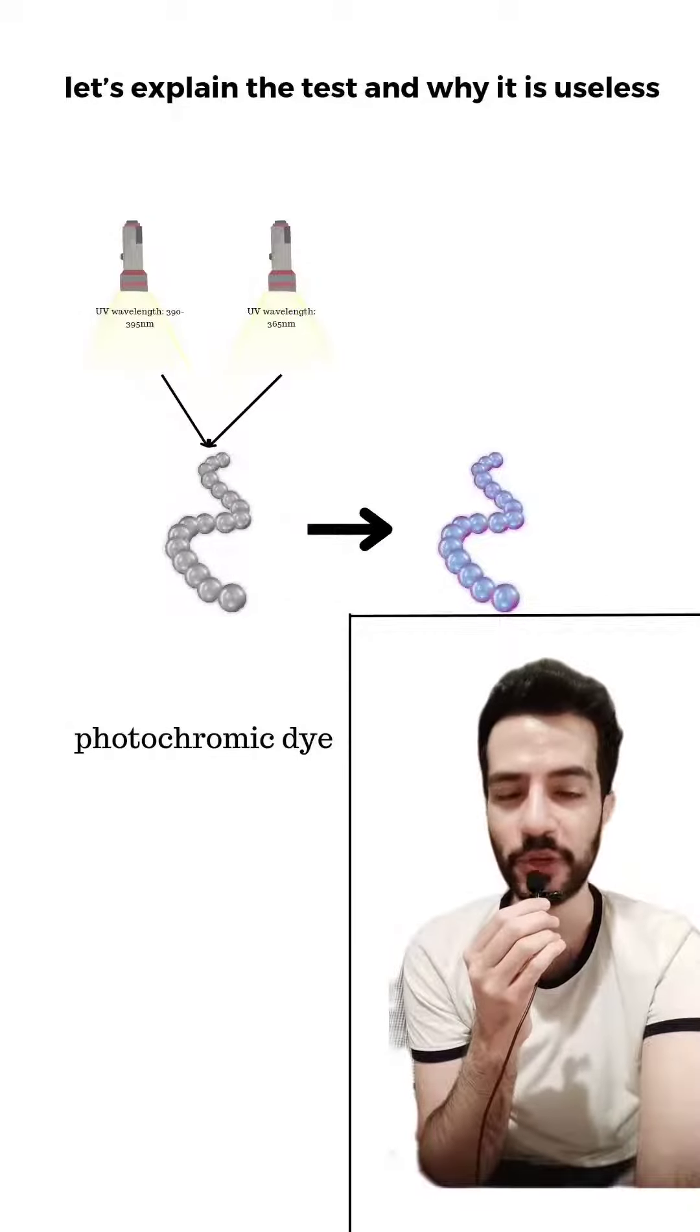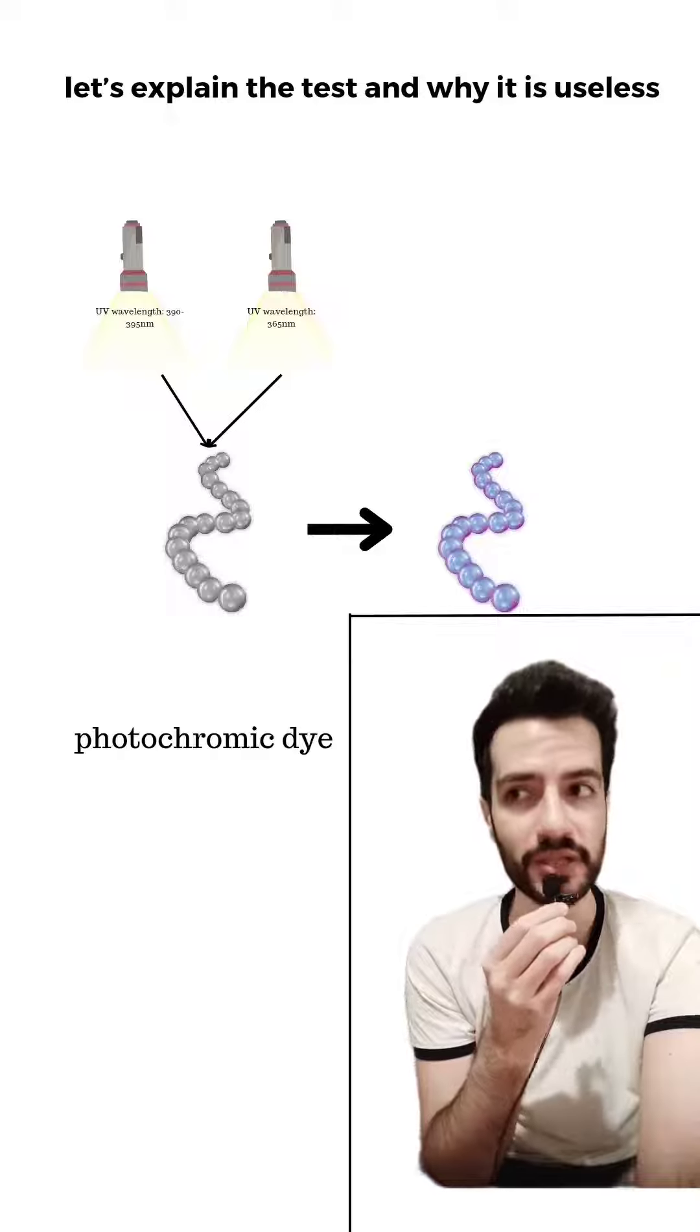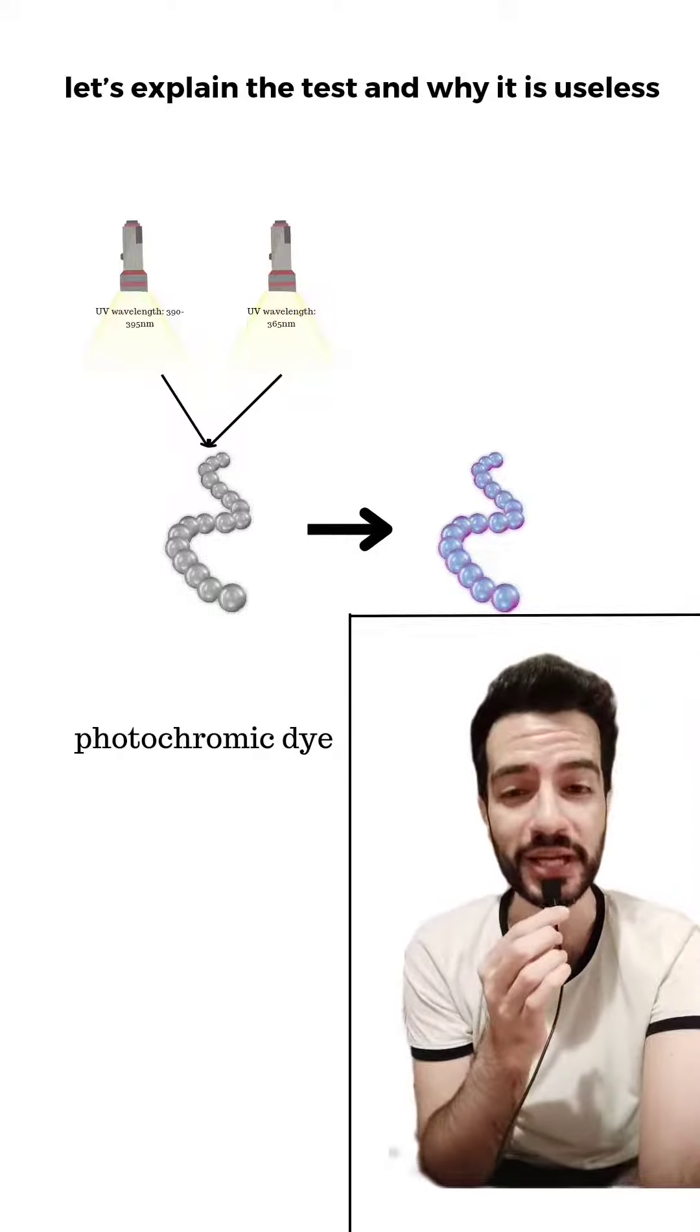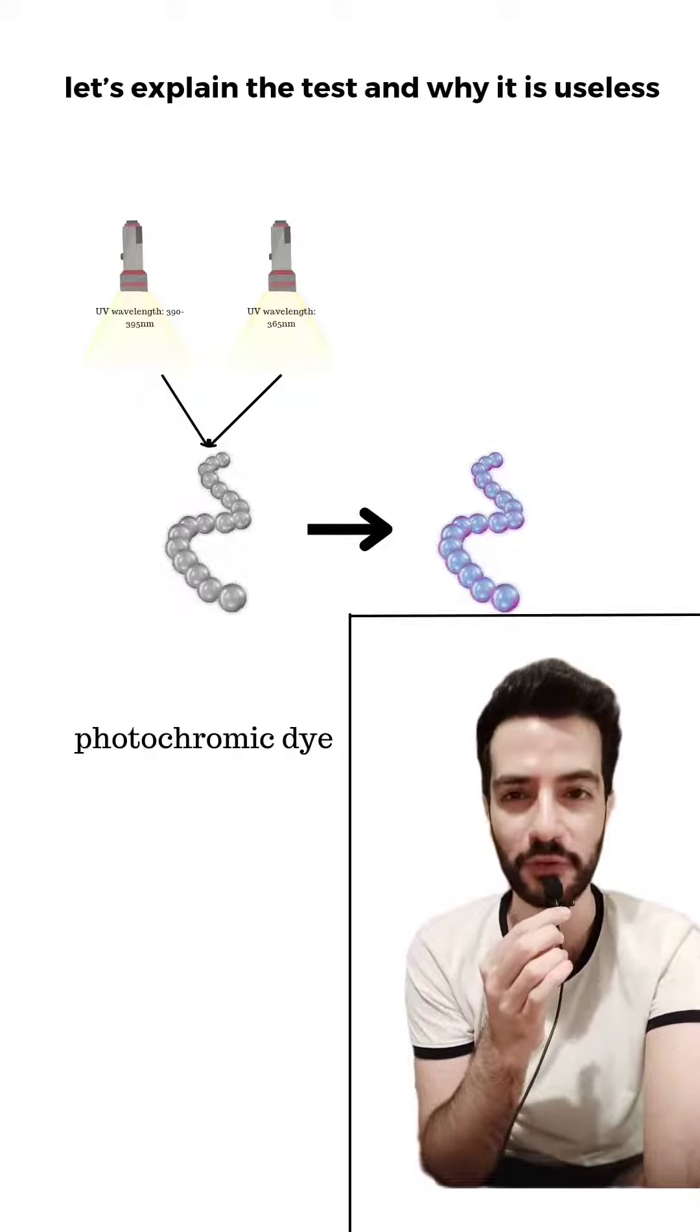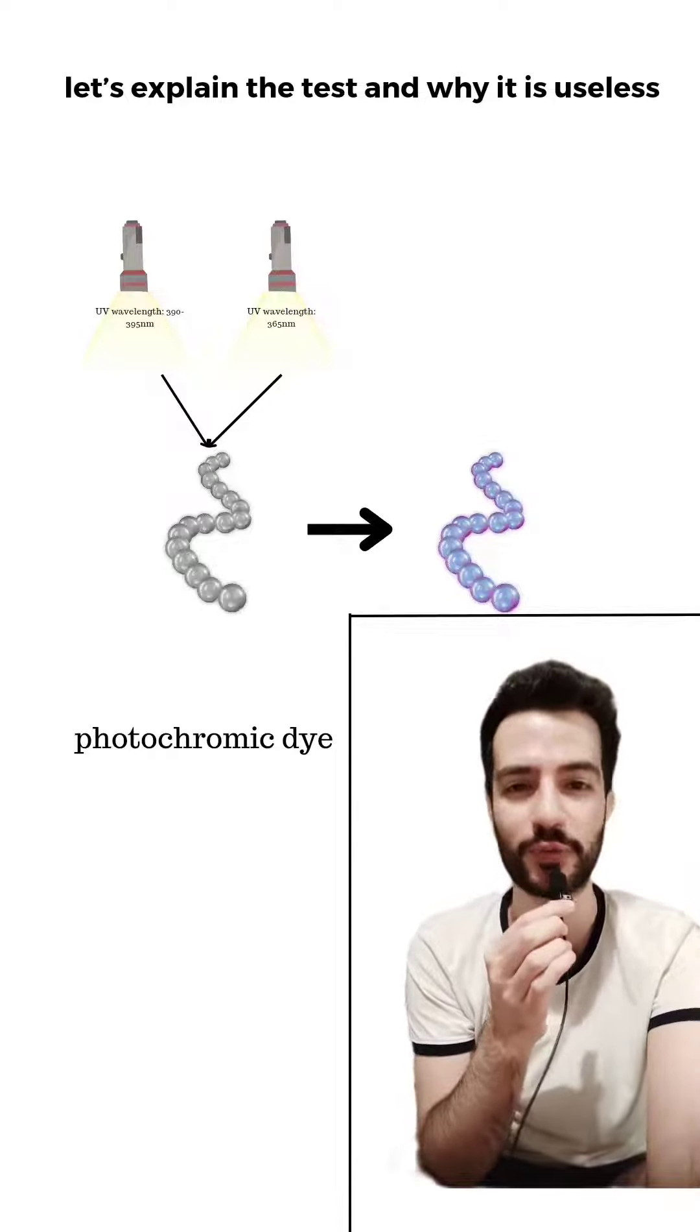The test is simply like this: there is a commercial UV torch being directed towards a transparent bead, and then those beads are turning into a colored bead because they contain what we call a photochromatic dye, which is a molecule that when interacting with UV can have small structural changes that allow it to interact with visible light.